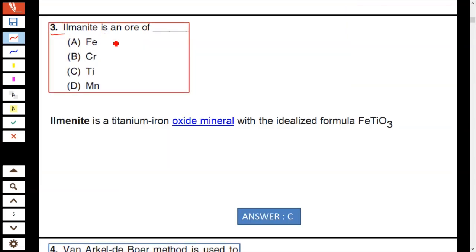Question number 3: Ilmenite is an ore of... Ilmenite is a titanium oxide mineral with formula FeTiO₃. Hence ilmenite is an ore of titanium.